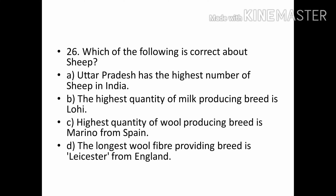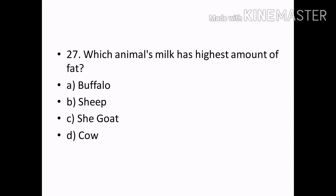Which of the following is correct about sheep? Options — Uttar Pradesh has the highest number of sheep in India; the highest quantity of milk producing breed is Lohi; highest quantity of wool producing breed is Merino from Spain; the longest wool fiber providing breed is Leicester from England. Correct answer: Option A — Uttar Pradesh has the highest number of sheep in India.